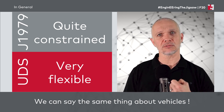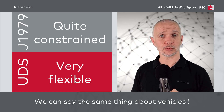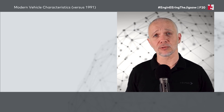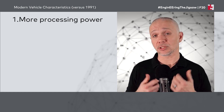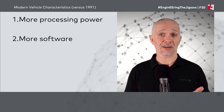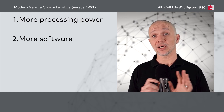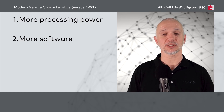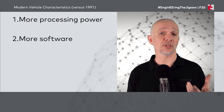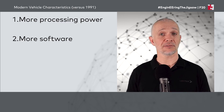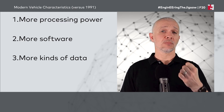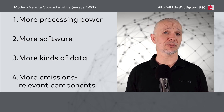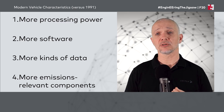Thinking about a modern vehicle in the 2020s versus 1991: firstly, there is a lot more processing power inside ECUs. We have more software and therefore more ECUs. In the early 1990s a car probably only had an engine management system, maybe a braking system, and then the radio was roughly the limit of the electronics — as we discussed in episodes F10 and F11. With more software we also get more kinds of data, and more emissions-relevant components in a modern vehicle.